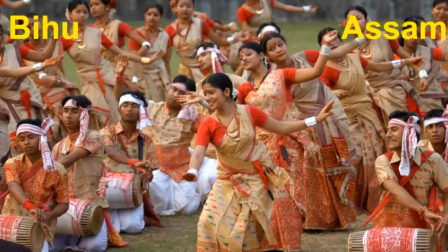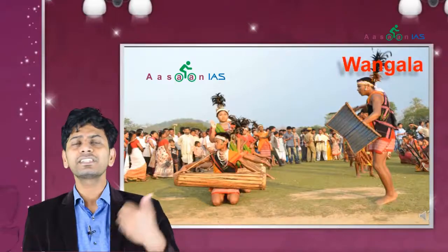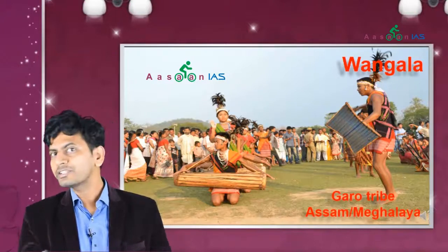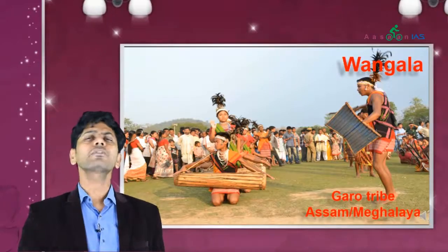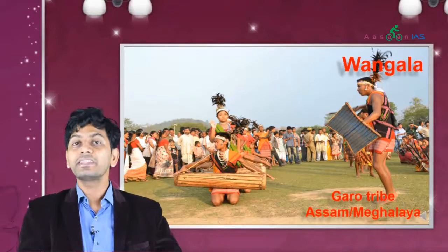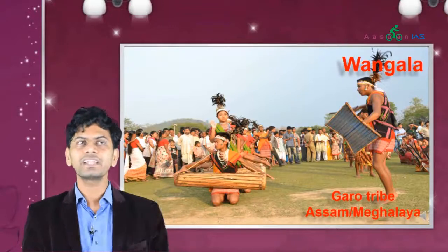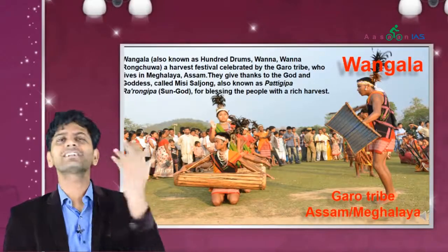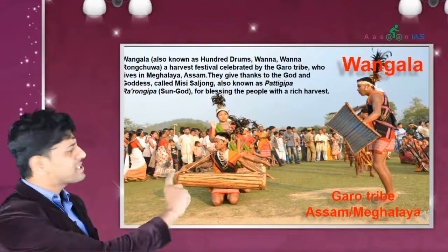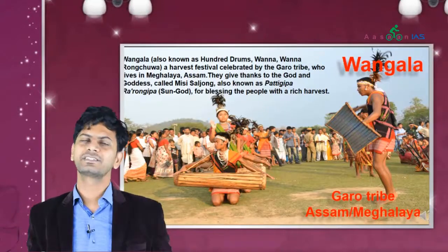Vangala dance is performed by the Garo tribe. The Garo tribe lives in Garo Hills — you know from geography, Garo, Khasi, Jaintia Hills — so they live in Meghalaya. They perform this Vangala dance related to harvest. Just remember: Garo tribe, Vangala dance. This is sufficient.